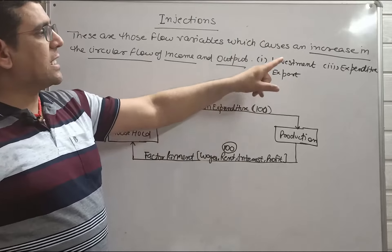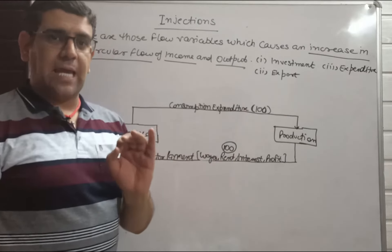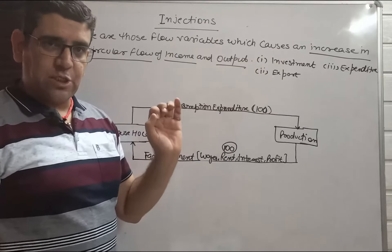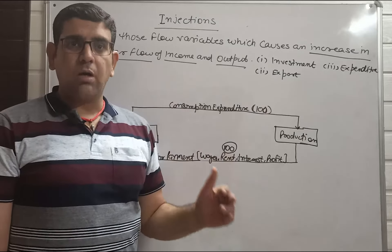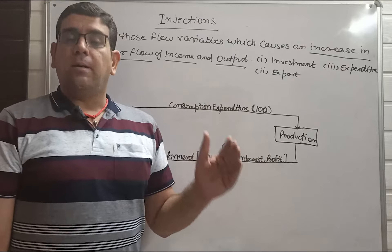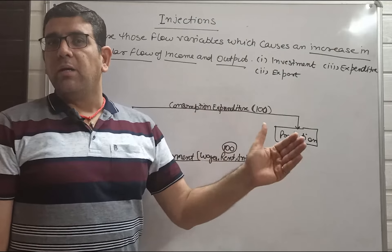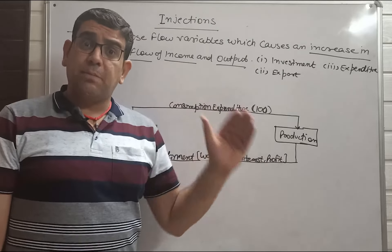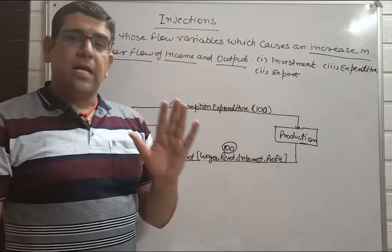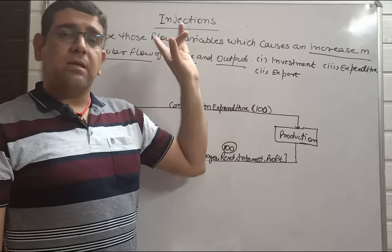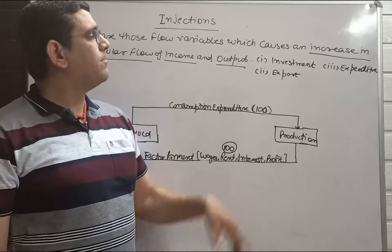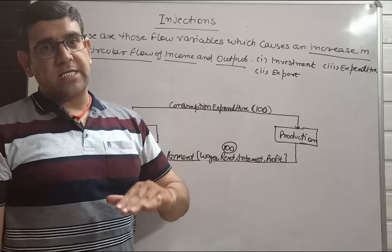First, check whether investment, export, and expenditure are flow variables or not. If any of them is a stock variable, we will exclude it. Investment is a change in capital stock during a certain specified time period — it equals Kt minus Kt-1. We measured investment over one time period, so investment is a flow variable. Export: whether import or export, it happens with the rest of the world not at a point of time but over a period of time, generally one year — so it is also a flow variable.